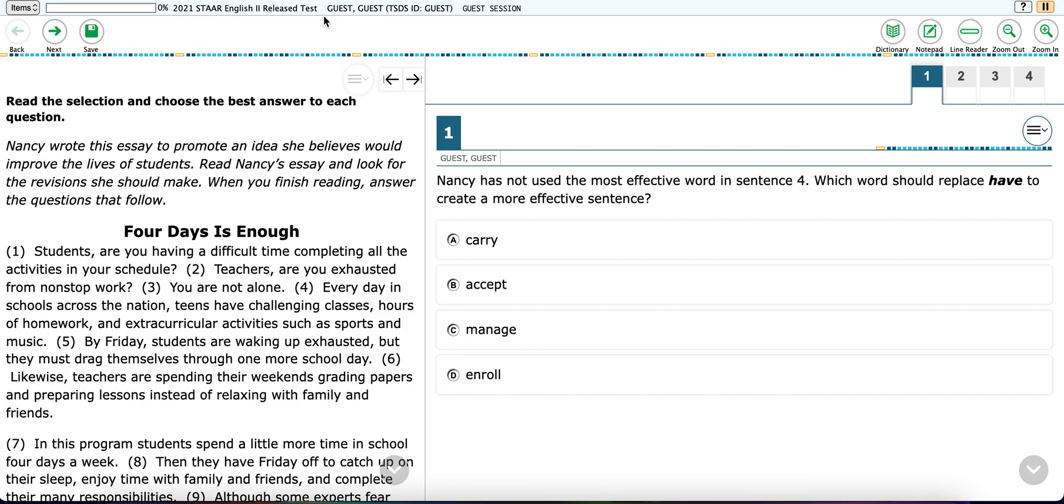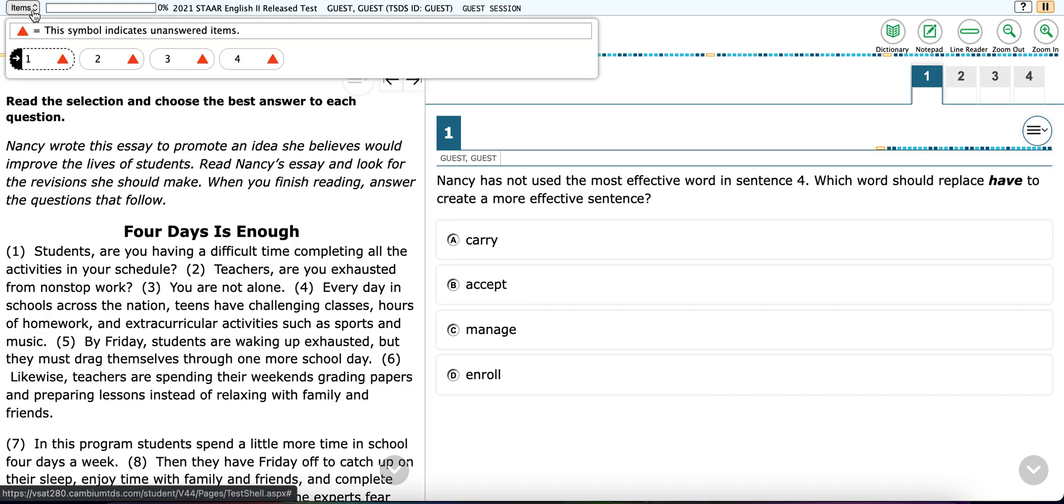One of the things that I really like about the new test is that you can click over here in items and it'll show you the number of questions you have and it will also tell you which question you're on. So you see how it has the gray arrow? That means I'm on test question one, and the red triangle, as the legend indicates, means that those are unanswered. This is also where you can check to see where you have questions flagged, and I will show you how to do that in a minute.